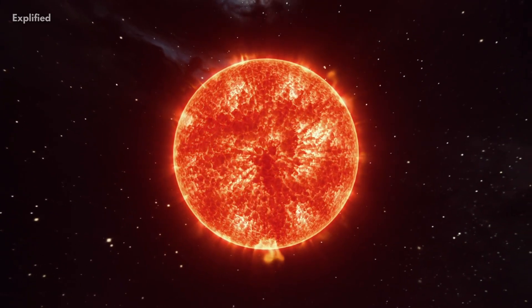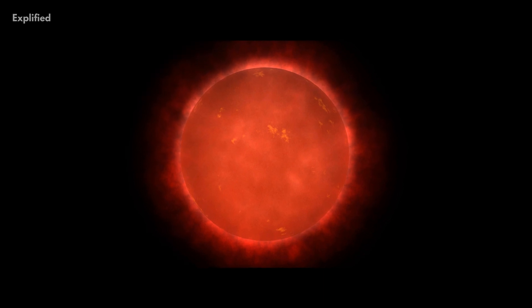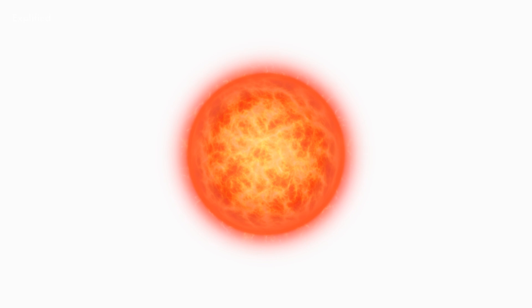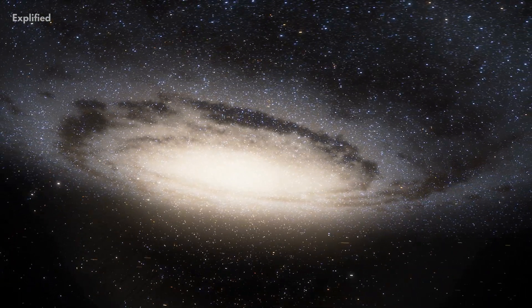The stars start swelling up and turn into red giants. They start shedding their outer layers as the forces of gravity become incapable of holding the star together. These layers that are expelled form some of the most beautiful objects in the universe: planetary nebulae.